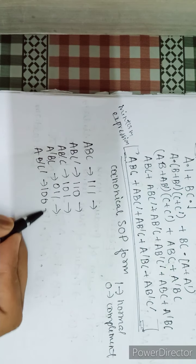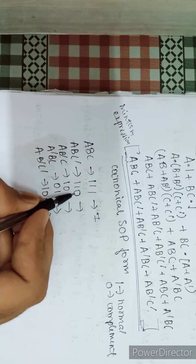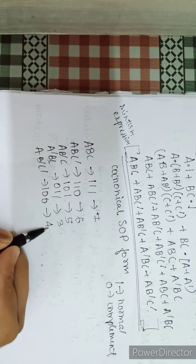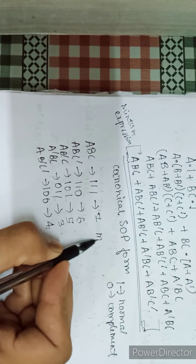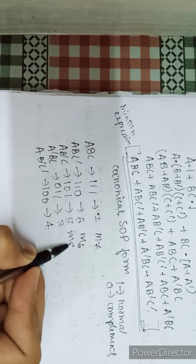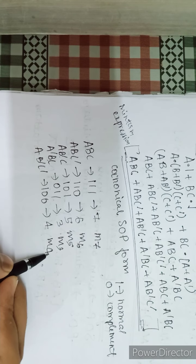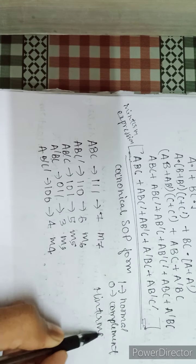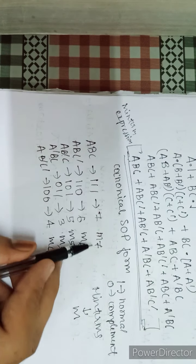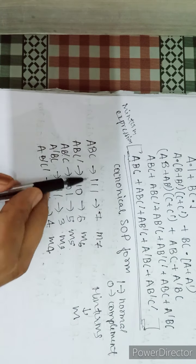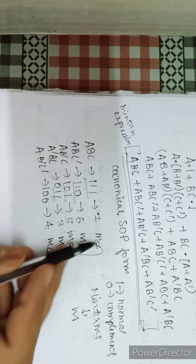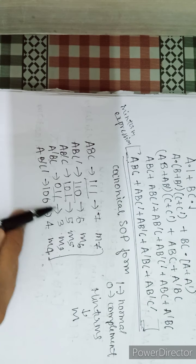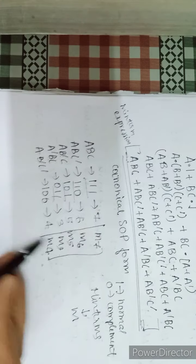In decimal values: 1,1,1 is 7; 1,1,0 is 6; 1,0,1 is 5; 0,1,1 is 3; and 1,0,0 is 4. So these are represented as m7, m6, m5, m3, m4 — min terms are represented by small m. This is the binary pattern, then its decimal equivalent, then the min term designation. In your exam if asked for min term designation, first convert to binary (1=normal, 0=complement), then find the decimal equivalent, then write as m followed by that number.